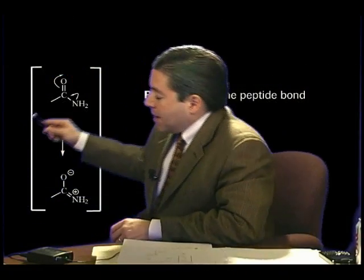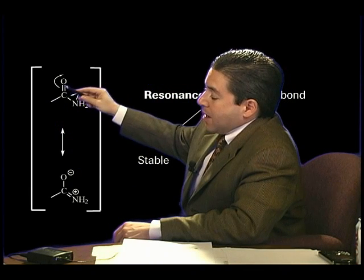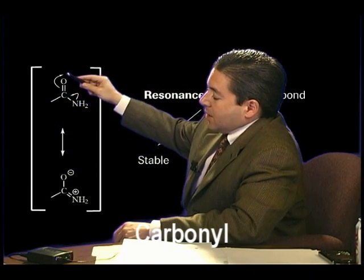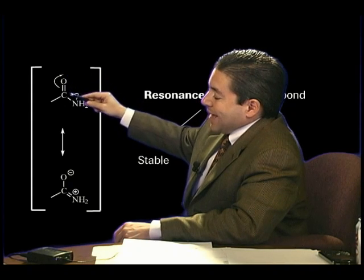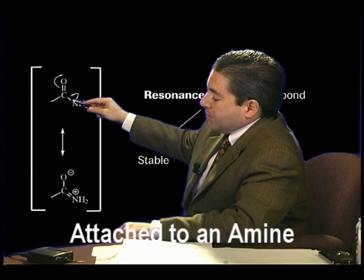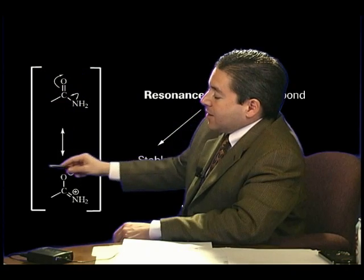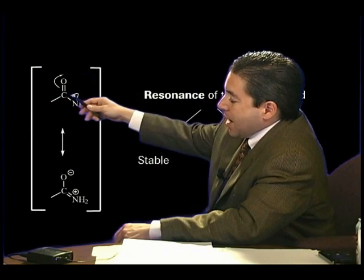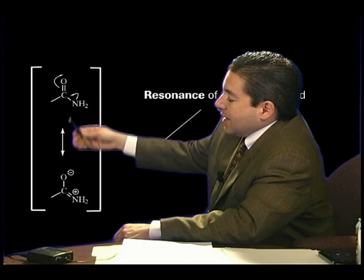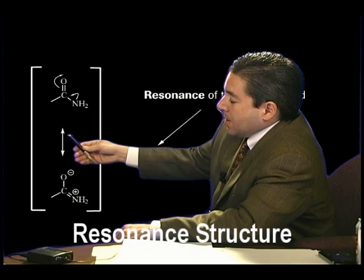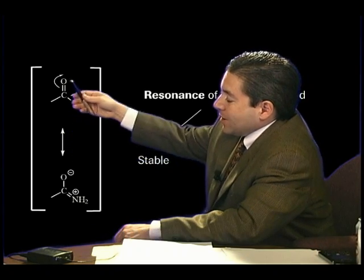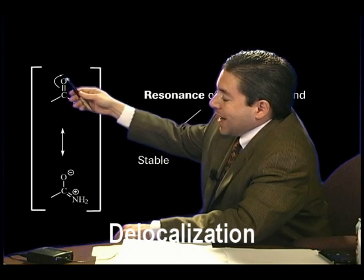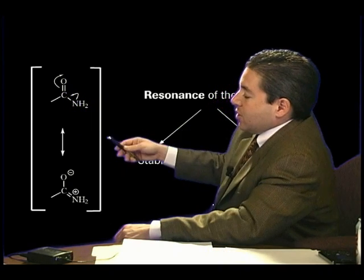The Amide, or Amide Bond, is a carbonyl — carbon doubly bonded to oxygen — with an amine attached to it. The brackets indicate that this carbonyl-amine complex, the Amide, is a resonance form, indicating that there is delocalization of the electrons among these three atoms: the oxygen, the carbon, and the nitrogen.